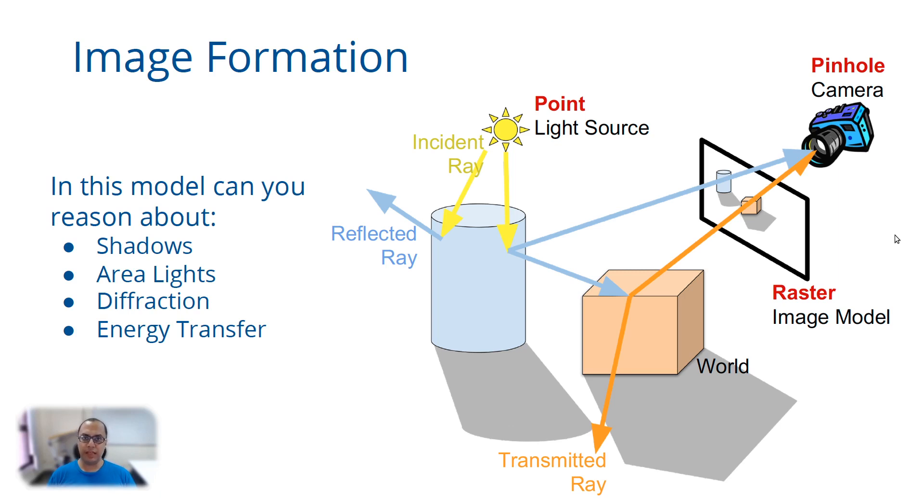Here are a few things I want you to think about. Given that we have this model, we will discuss all the details about how do we set up these objects in the virtual world, how do we create this imaging model and how do we situate and orient and take pictures with this pinhole camera. We will discuss all that. You do not want to worry about it, but assuming that you know this is an abstract model of image formation, in this model can you reason about shadows?